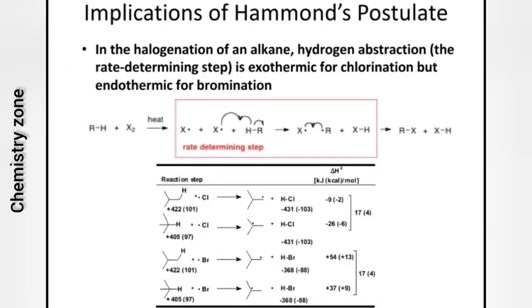Implication of Hammond's Postulate: in the halogenation of an alkane, hydrogen abstraction — the rate-determining step — is exothermic for chlorination but endothermic for bromination. Exothermic means heat energy is released; endothermic means heat energy is absorbed.